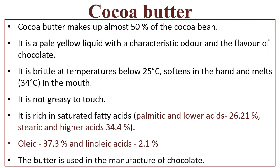Cocoa butter makes up almost 50% of the cocoa bean. It is a pale yellow liquid with the characteristic odor and flavor of chocolate. It is brittle at temperatures below 25°C, softens in the hand, and melts at 34°C in the mouth. It is not greasy to touch. It is highly rich in saturated fatty acids: palmitic and lower acids 26.21%, stearic and higher acids 34.4%, oleic acid 37.3%, and linoleic acids 2.1%. The butter is used in the manufacture of chocolate.